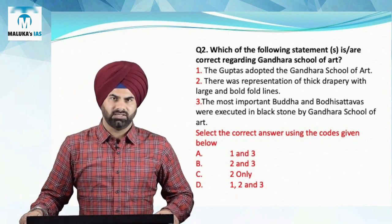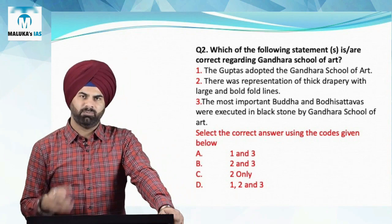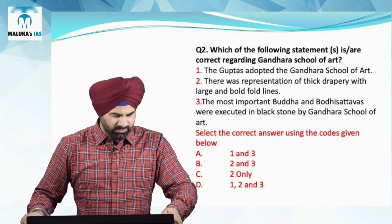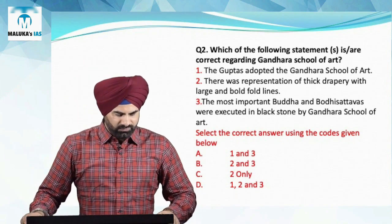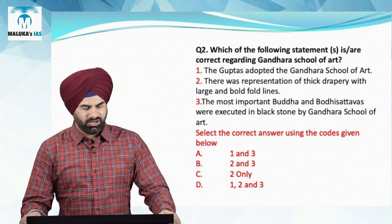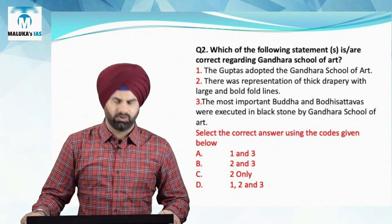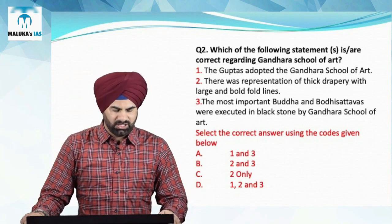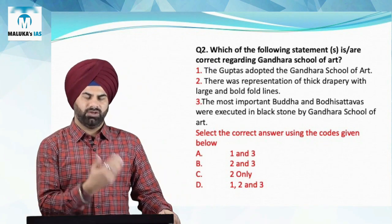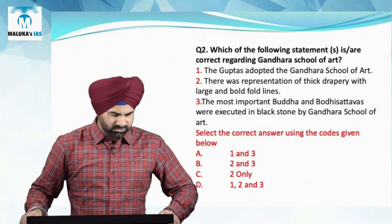The Mathura school of art was famous for its Yakshaginis, Apsaras, and Naginis, depicted in a beautiful manner. The first statement is wrong. The second statement — that there were representations of thick drapery with large and bold fold lines — is correct. The drapery was large with bold fold lines, layered one over another, so statement B is right.